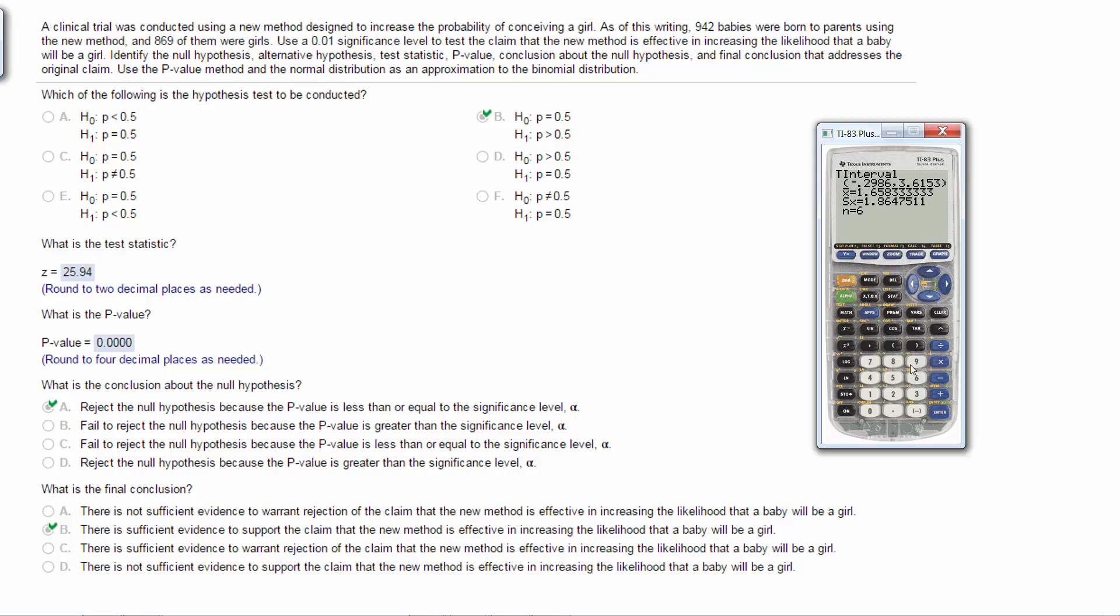On this one to find this test statistic, I'm gonna go into stat test. Because this is 869 out of 942, I know that that's a proportion. It's definitely a z, right? Because it's a huge sample size. So I go into the proportion. This p0 is my hypothesis value, which is 0.5. My x is the 869. My sample size is 942. And I just have to be careful here because this has to match my alternative.